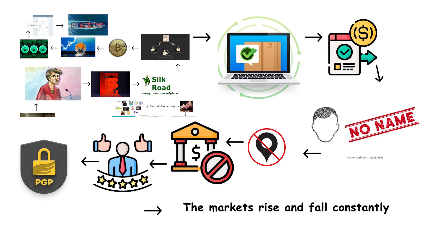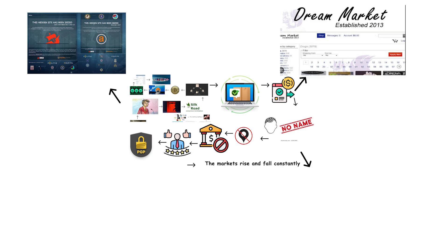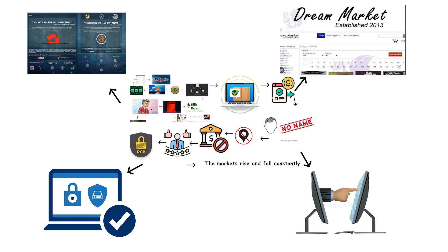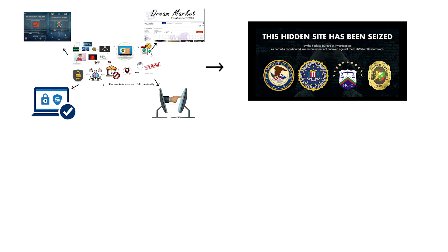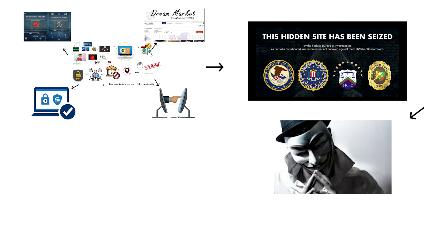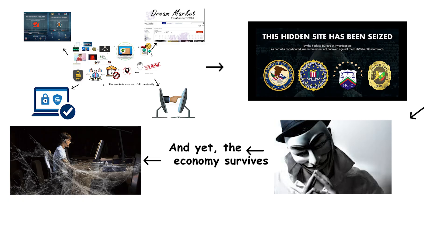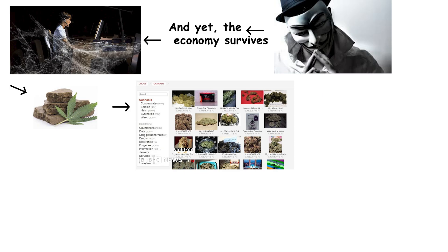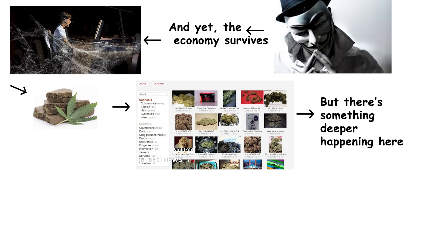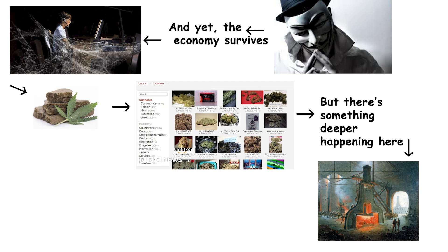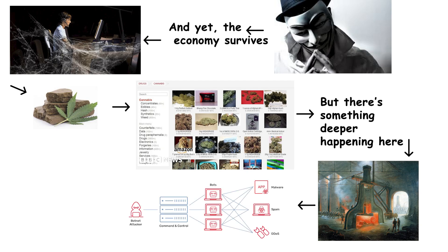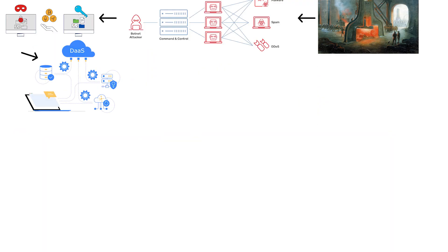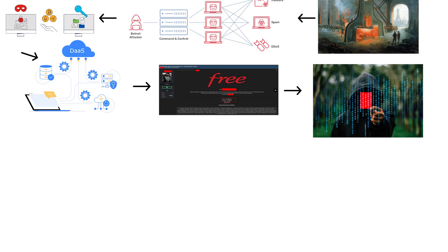The markets rise and fall constantly. When one is taken down — like AlphaBay or Dream Market — another emerges, stronger and more secure. Law enforcement infiltrates them with undercover operations. Hackers take over them with exit scams. And yet the economy survives, because this layer isn't built on technology — it's built on demand. As long as someone wants what's forbidden, the darknet will provide it. But there's something deeper happening here: the industrialization of anonymity. Vendors rent out botnets for DDoS attacks, sell ransomware kits with customer support, or offer data-as-a-service — leaked databases updated weekly. It's organized crime turned digital, complete with logistics, branding, and marketing.